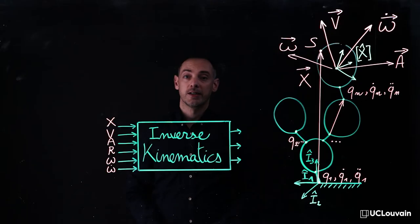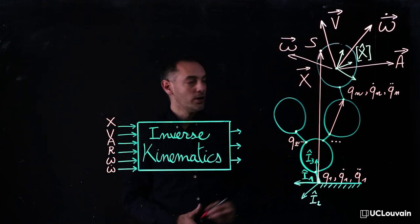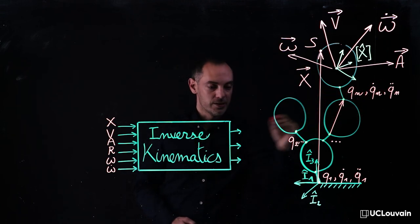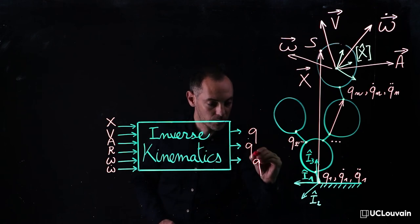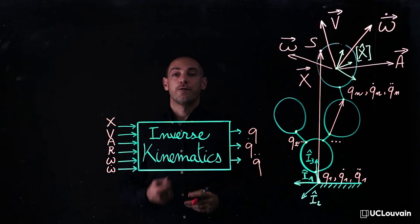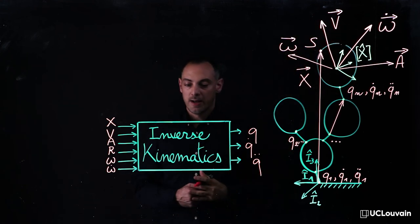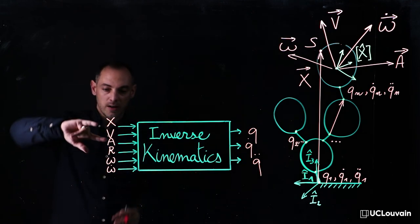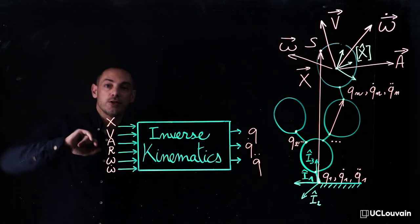Conversely to the direct kinematics, the inverse kinematics enables to compute the generalized coordinates q, q dot, and q dot dot as a function of the absolute kinematics. That is to say, the absolute position, velocities, and accelerations.